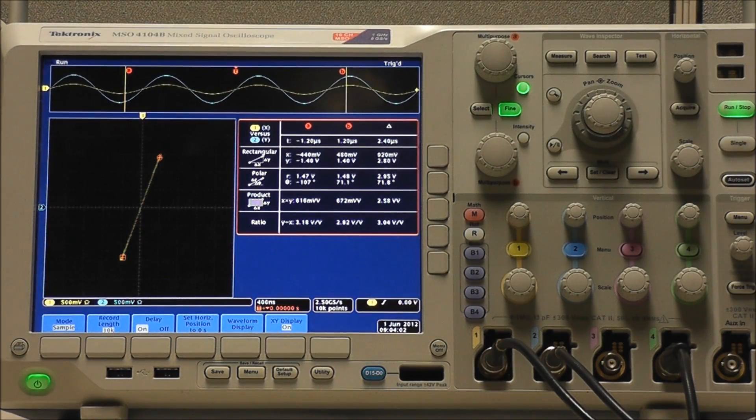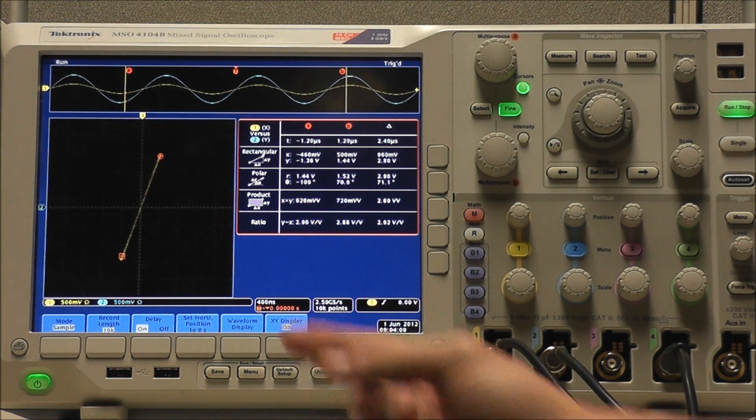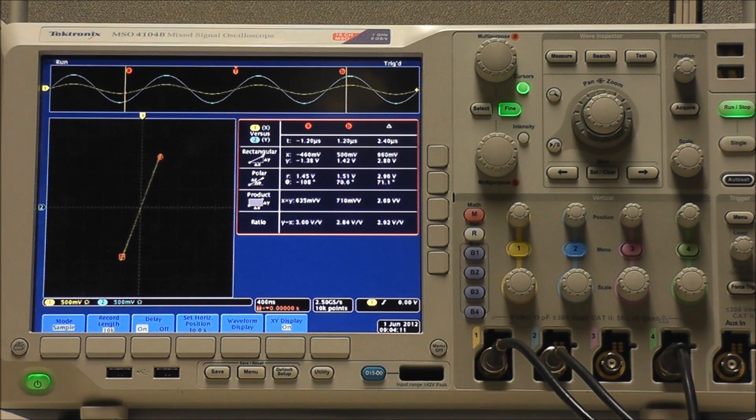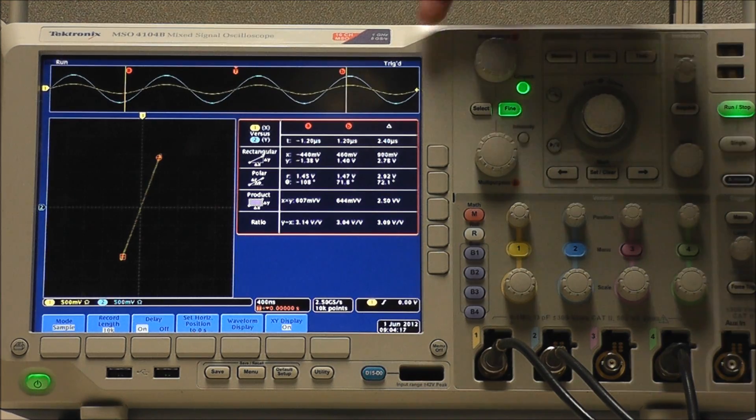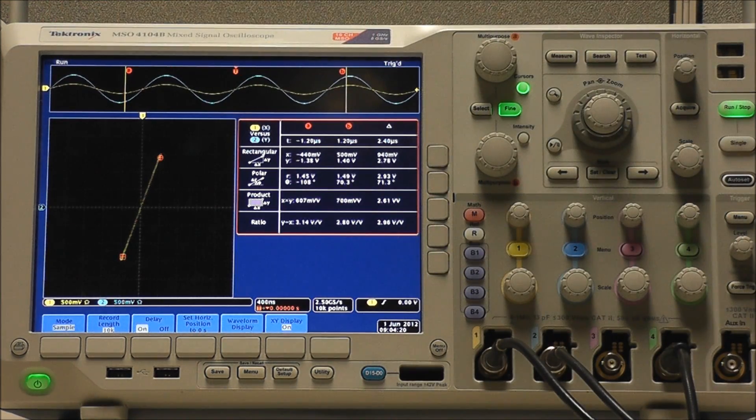Now we're going to look at an example of waveforms with differing voltages. We have a straight line, so we know that our waveforms are in phase, or at least very, very close. However, now the ratio is approximately 3 volts per volt, which tells us that the amplitude of our signal from channel 2 is 3 times greater than that of our signal from channel 1. And really, we can sort of see this in the waveform display above.